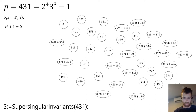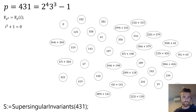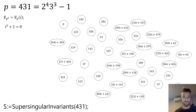As we know, the number of supersingular j-invariants is always very close to p/12. In this case there are 37 nodes in the toy example — maybe one of them is hidden — but those are all of the j-invariants that are supersingular over this prime characteristic. Magma output them, so all was fine, and I started drawing the supersingular isogeny graph.